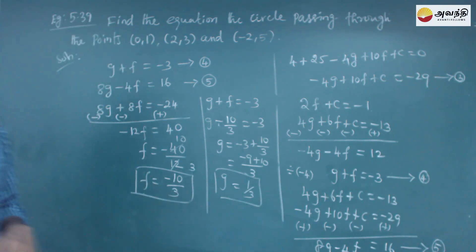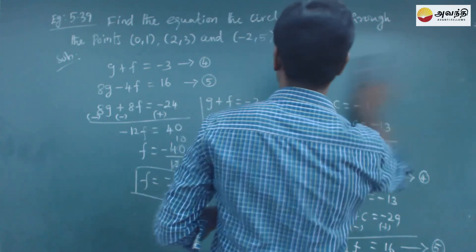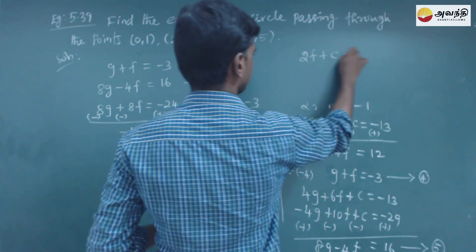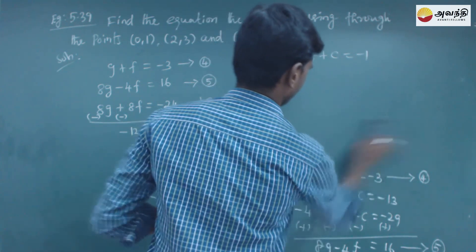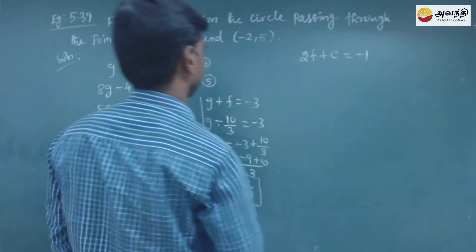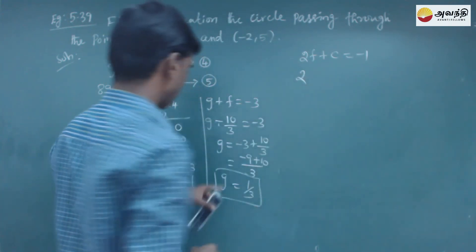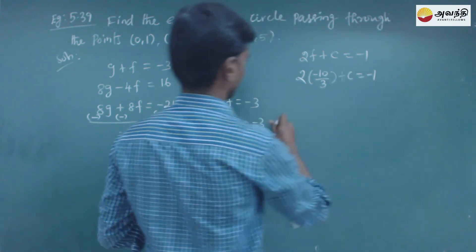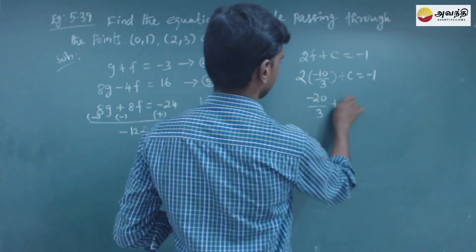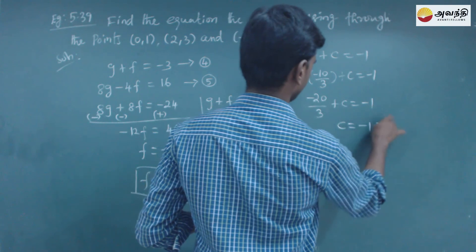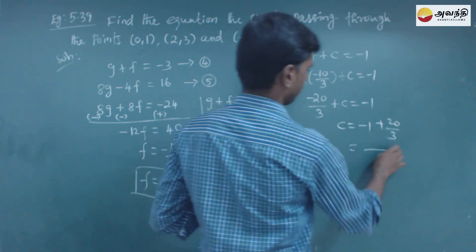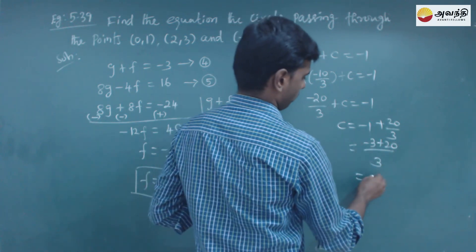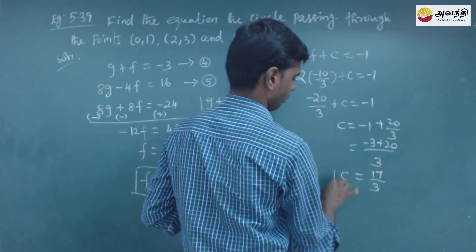Now finding c. Substituting f equals minus 10 by 3 into equation 1: 2 times (minus 10 by 3) plus c equals minus 1. That is minus 20 by 3 plus c equals minus 1. So c equals minus 1 plus 20 by 3, which equals 17 by 3.